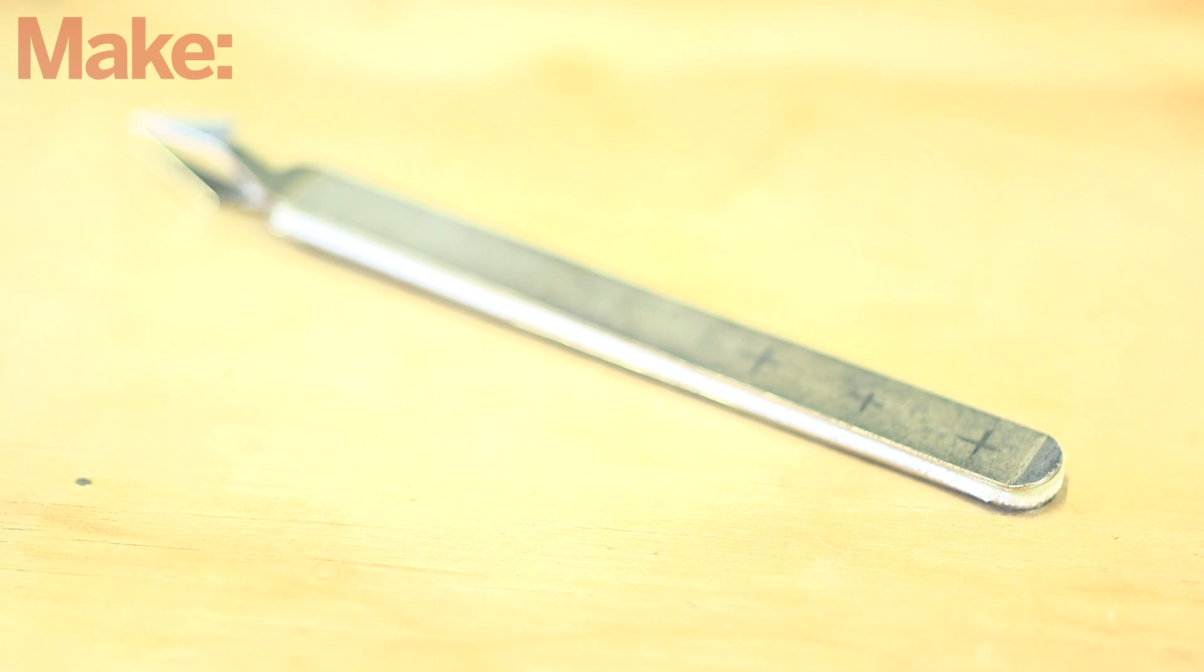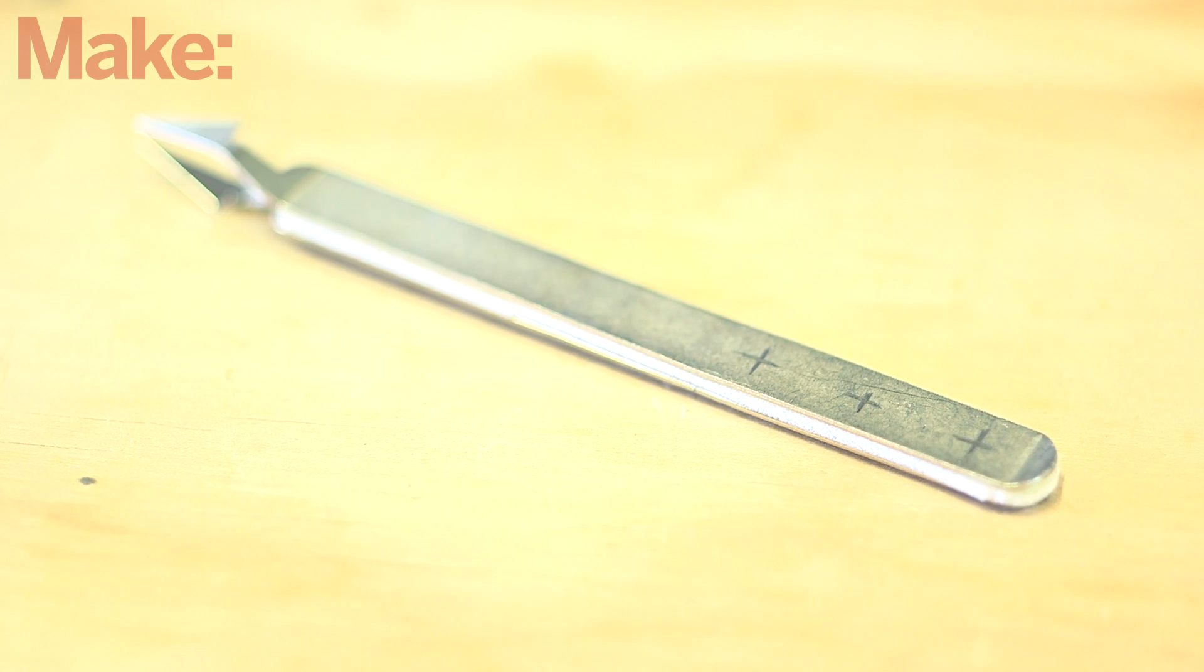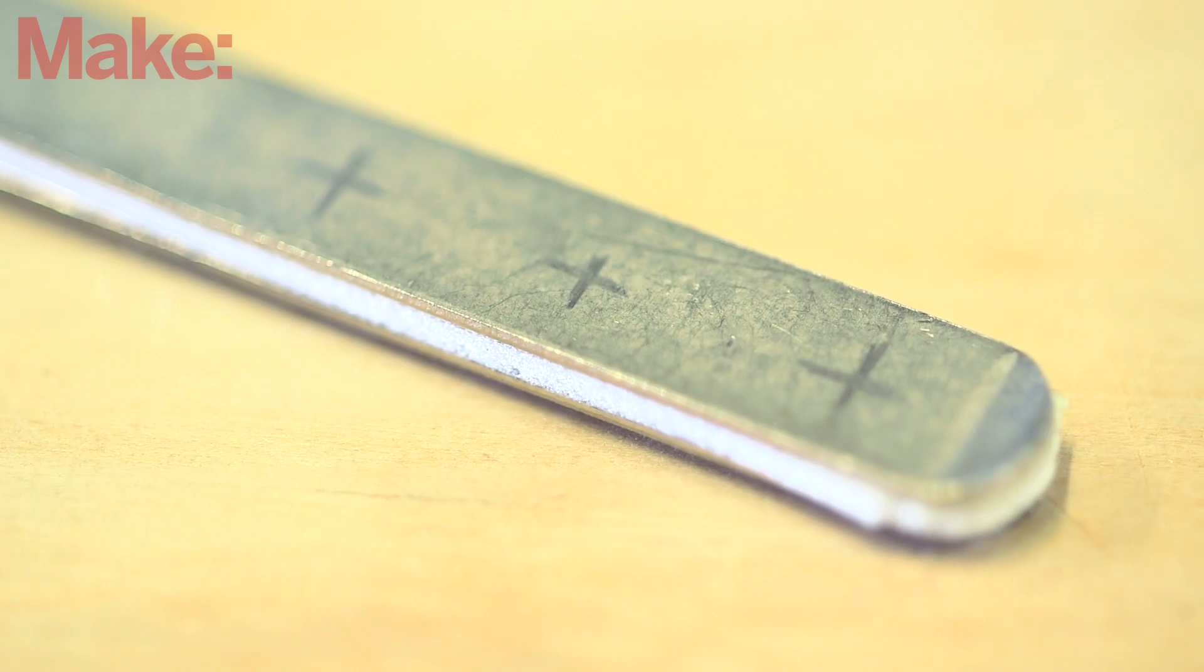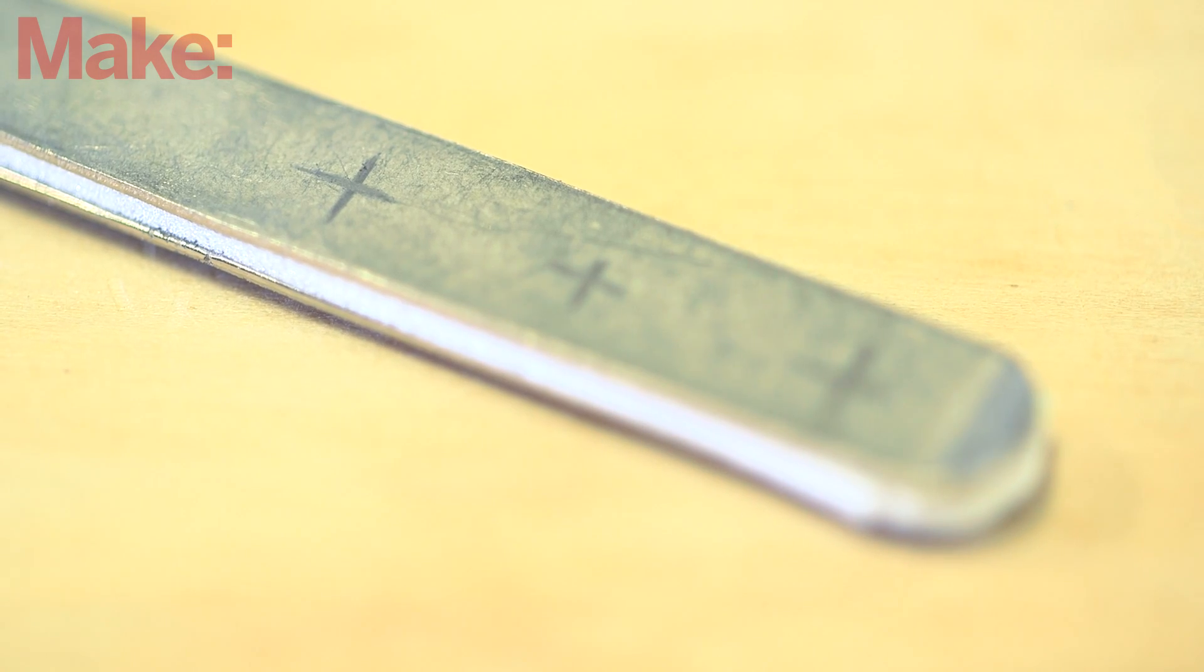Using foam tape, secure the two tweezer jaws together with the edges carefully aligned. Now mark three points along the center of the top jaw at about one-quarter, three-quarters, and one-and-one-quarter inches from its rounded end.